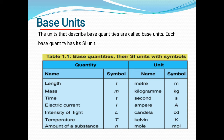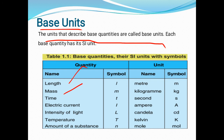Similar to base quantities and derived quantities, there are base units and derived units. The units that describe base quantities are called base units. Each base quantity has its SI unit. Table 1.1 contains the base quantities, their SI units, and symbols. The first column contains the physical quantities: length, mass, time, electric current, intensity of light, temperature, and amount of substance.